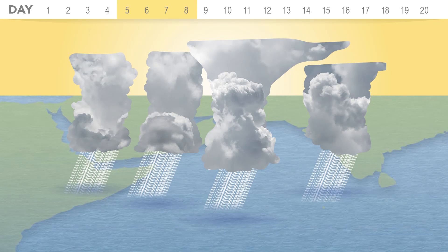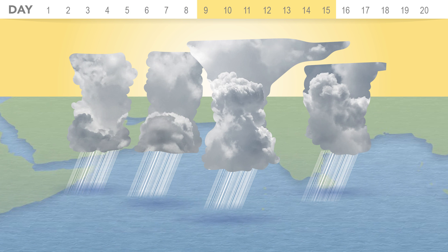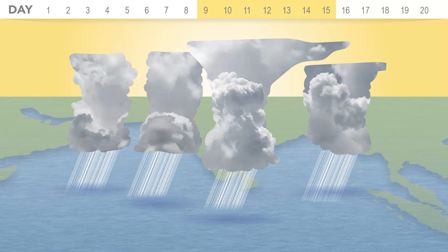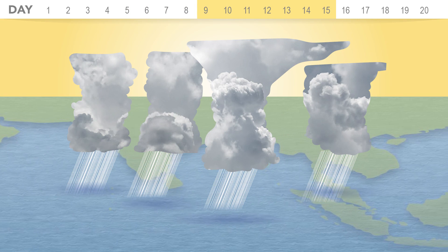The tiny raindrops from the first shallow storm clouds evaporate quickly and cool the air, creating cold pools that sink to the surface, forcing warm, moist ocean air at their edges upward, creating the large anvil-topped storms.